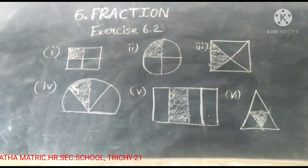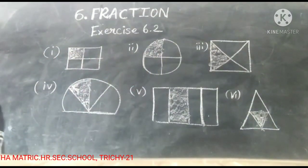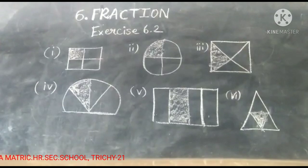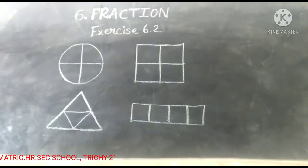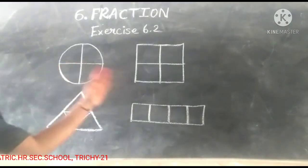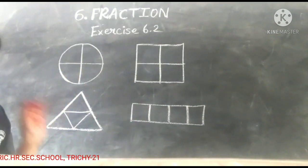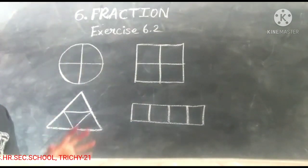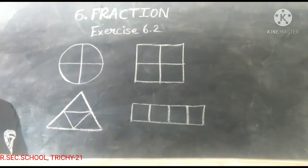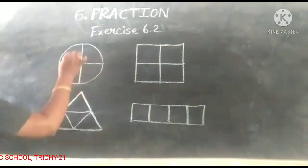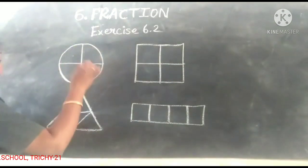You want to shade the quarter portion of the shape. Next one — again, the shapes are given. So now you are going to shade three-fourths of the picture. Three-fourths. So: one, two, three, four — totally four parts.